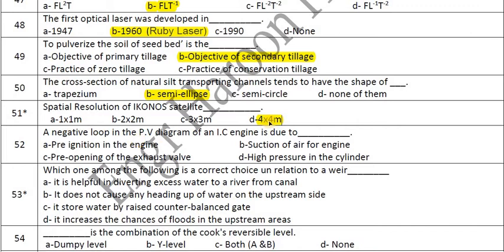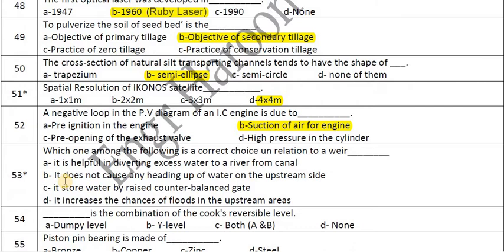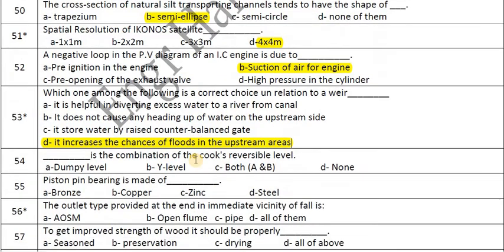A negative loop in the PV diagram of an IC engine is due to the suction of air for the engine. A raised structure at a weir increases the chances of flooding upstream. The dumpy level and the wye level are both examples of Cook's reversible level.